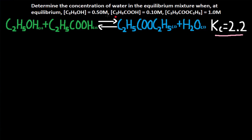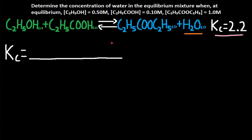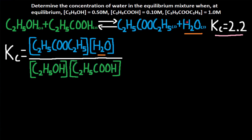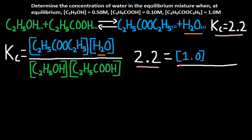Let's try this next question. It's asking us to determine the concentration of water in the equilibrium mixture, so we need to find H2O and write the equilibrium expression for Kc. Kc equals products divided by reactants: C2H5COOC2H5 multiplied by H2O, divided by C2H5OH and C2H5COOH. No coefficients, so no exponents. Plugging in the numbers: Kc is 2.2, C2H5COOC2H5 is 1.0 M, C2H5OH is 0.50, and C2H5COOH is 0.10. We still need to find H2O.